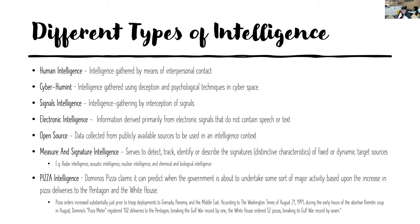Signals intelligence is something you may have heard of — within Australia we have the Australian Signals Directorate, and the military also uses a lot of signals intelligence. It can coexist with electronic intelligence. There's also open source intelligence, or OSINT, measure and signature intelligence, and then also what's called pizza intelligence.